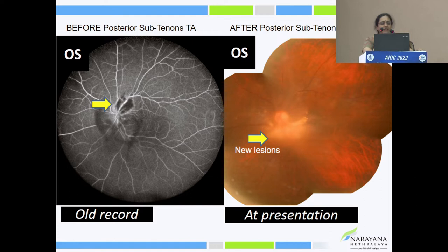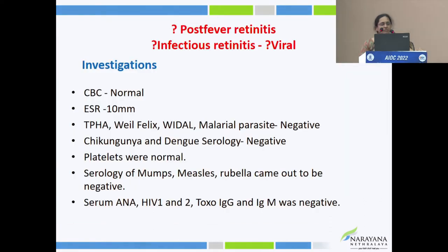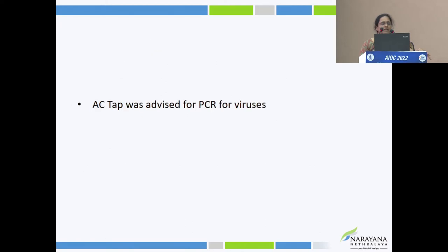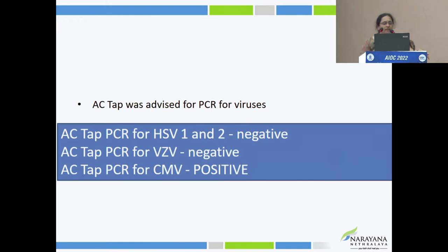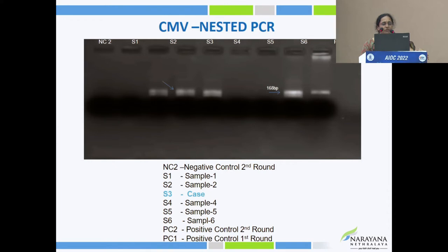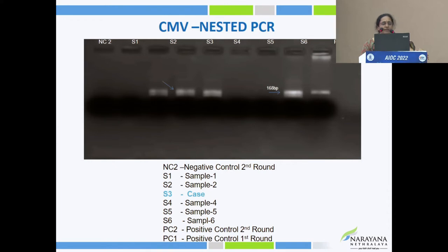Investigations for most causes of post-fever retinitis — including chikungunya, dengue — and autoimmune workup were also negative. Toxoplasma titers were also negative. AC tap PCR was advised and CMV came positive — a nested PCR showing positivity for CMV virus.